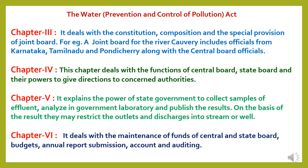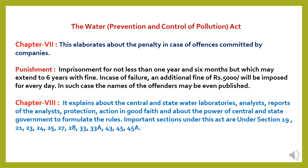Chapter 5 explains the power of the state government to collect samples of effluents, analyze them in government laboratories and publish the results. On the basis of the results, they may restrict the outlets and discharge into a stream or well. Chapter 6 deals with the maintenance of funds of central and state boards, budgets, annual report submission, accounts and auditing. Chapter 7 elaborates about the penalty for offences committed by companies: imprisonment for not less than one year and six months, which may extend to six years with fine. In case of failure, an additional fine of 5000 rupees will be imposed for every day, and the names of offenders may be published. Chapter 8 explains about central and state water laboratories, analysts' reports, protection of actions in good faith, and the power of central and state government to formulate rules.